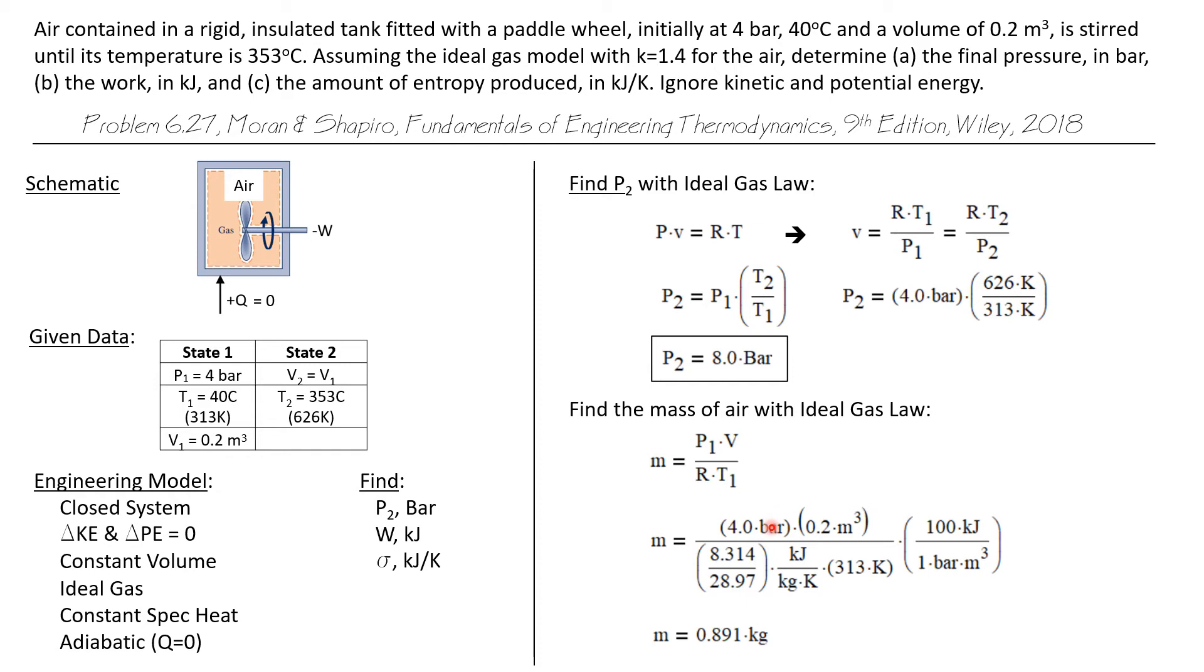So P1 is 4 bar. The volume is 0.2 cubic meters. The gas constant for air is the universal gas constant 8.314 divided by the molecular weight of 28.97. That quotient having units of kilojoules per kilogram K. The initial temperature is 313 K. And I have an energy conversion term I need to add here. One bar cubic meters is equivalent to 100 kilojoules. And I conclude that the mass is 0.891 kilograms.